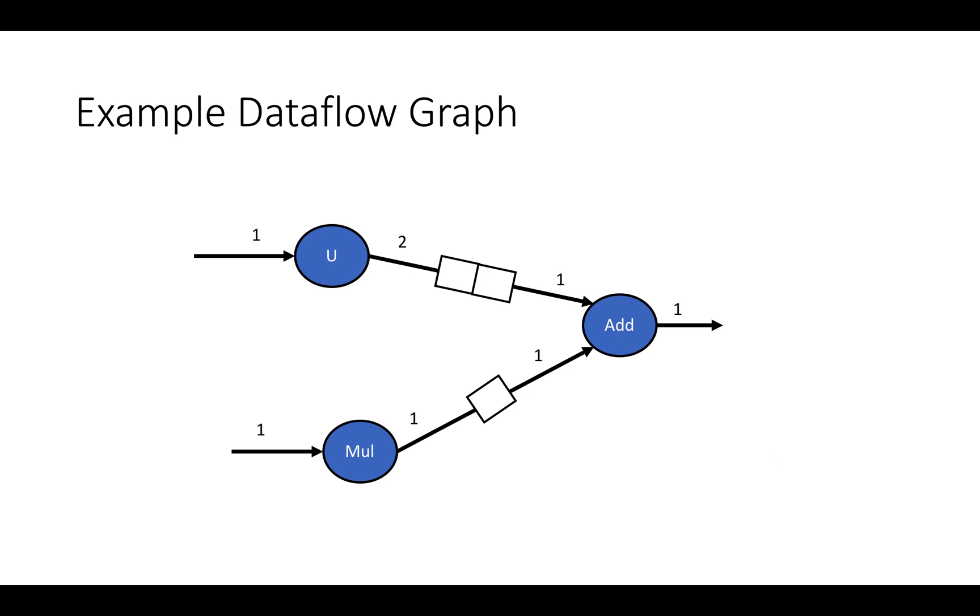Here's an example execution of a synchronous data flow graph with the firing schedule: upsample, multiply, add, multiply, add. The upsample takes in a token and passes two tokens into this edge which fills up the FIFO. Then multiply executes which puts a single value in the FIFO on its edge. Then the add executes, consuming one value from each of the FIFOs on its edge. Then multiply executes again producing a value and the add consumes the value. Notice at the end we've fired all the nodes at least once and there's no data left in the FIFOs. At the start there was no data in the FIFOs and at the end there's no data in the FIFOs.